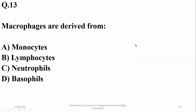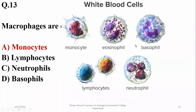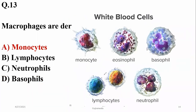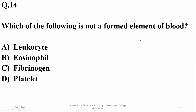Macrophages are derived from monocytes. Monocytes stay in the blood for a few hours and then move to the tissues, forming tissue macrophages. Which of the following is not a formed element of blood? Leukocytes, eosinophils, and platelets are usually found in blood, but fibrinogen is a blood plasma protein, so the right option is fibrinogen.